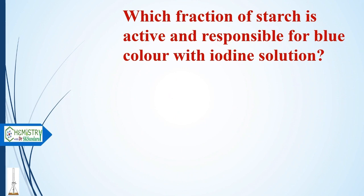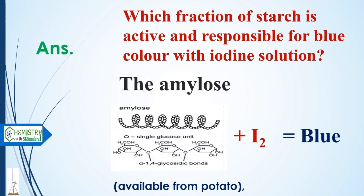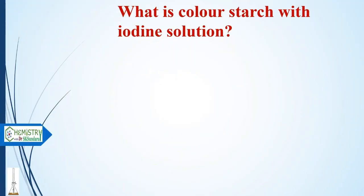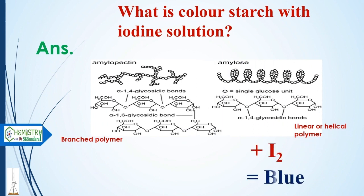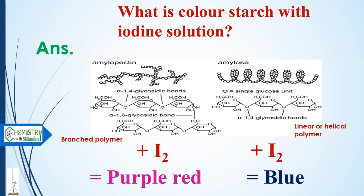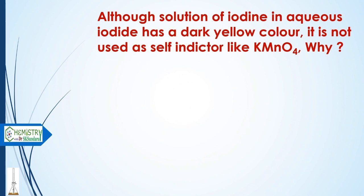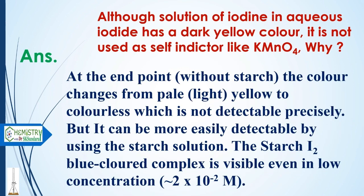Which fraction of starch is active and responsible for the blue color with iodine? The answer is amylose — it forms a blue color when it reacts with I₂. Amylopectin forms a purple-red color with I₂. For iodimetric or iodometric titrations, we use amylose starch. Although iodine in aqueous iodide solution has a dark yellow color, it is not used as a self-indicator like potassium permanganate, because at the end point the color changes only from pale yellow to colorless, which is not precisely detectable. The blue iodine-starch complex is visible even at very low concentrations (2×10⁻² M), which is why starch is used as the indicator.